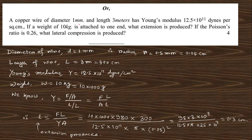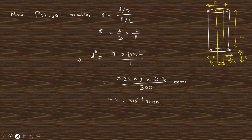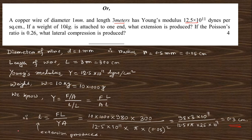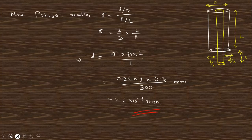Elasticity problem: A copper wire of diameter 1 mm and length 3 m with given Young's modulus. Using Y = (F/A)/(ΔL/L), substituting the values gives an extension of 0.3 cm. Using the Poisson ratio σ = (lateral strain)/(longitudinal strain), the change in diameter (lateral compression) can also be calculated. Do this calculation yourself; comment if you have any problems.